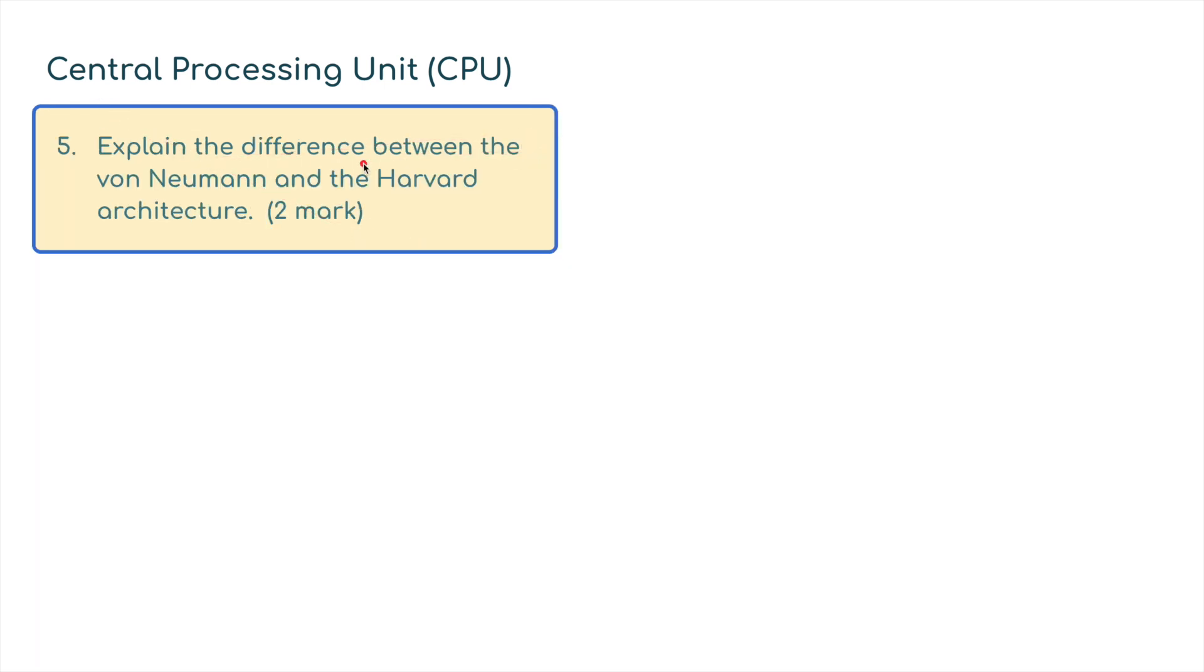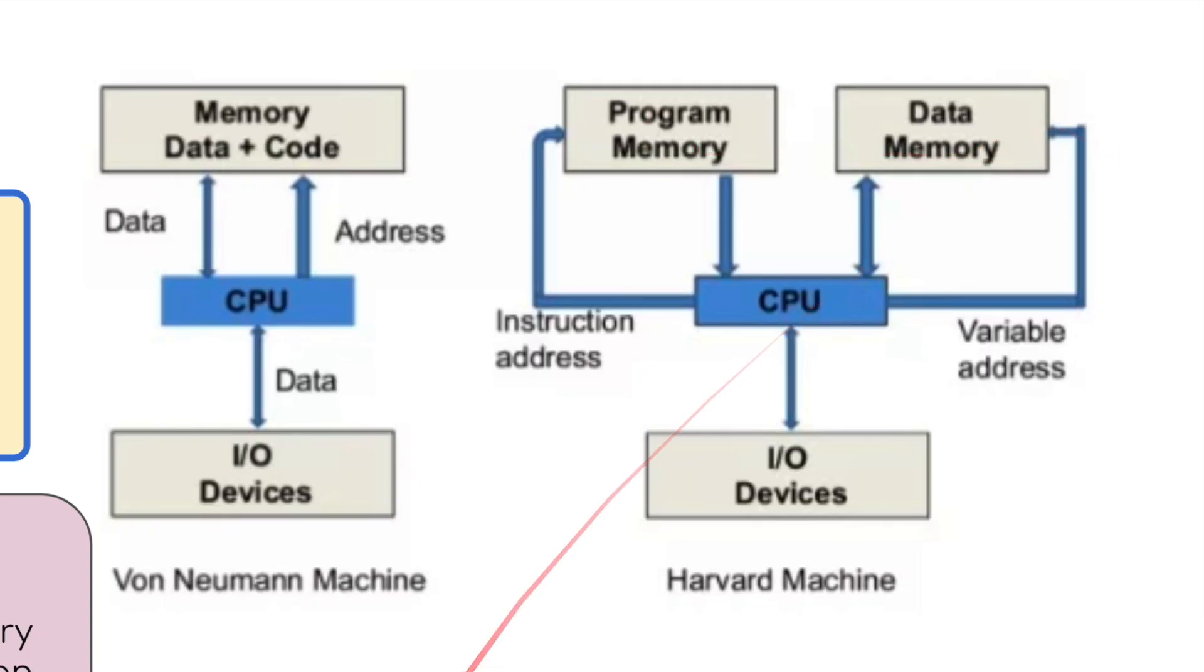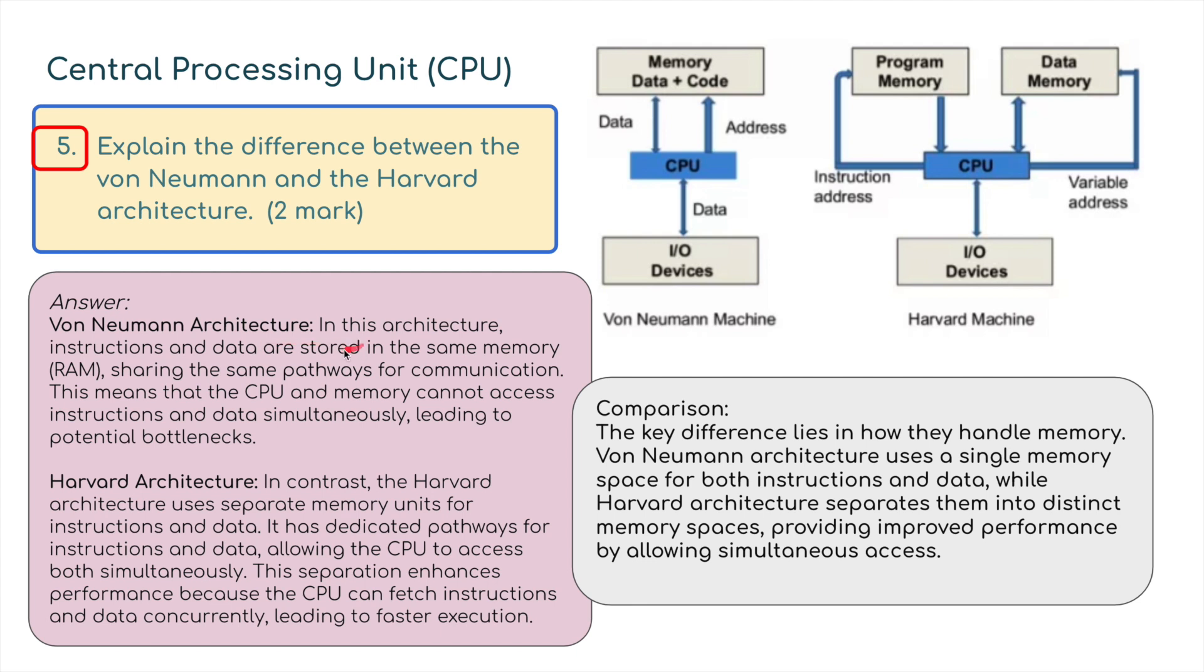Next, explain the difference between von Neumann and Harvard architecture. Let's get a diagram up here. In von Neumann, memory contains both data and code. The CPU talks to input and output devices with data and addresses flowing into this. In contrast, we can see a split between the program memory and the data memory. Von Neumann architecture has instructions and data stored in the same memory, stored in RAM, sharing the same pathways for communication.